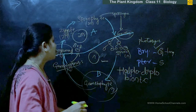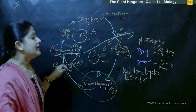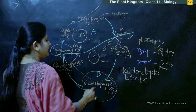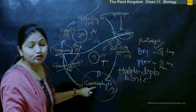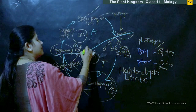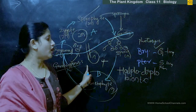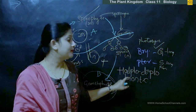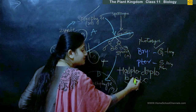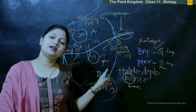Coming to the pteridophytes: the sporophyte is dominant, long-lived, and photosynthetic. The gametophytic stage is not photosynthetic. But the gametophytic stage also takes almost as much duration as the sporophyte. Hence both have equal importance and almost equal durations, so we again call this haplo-diplobiontic. It means the haploid life cycle and diploid life cycle are shared by these organisms almost equally. This is the haplo-diplobiontic life cycle.